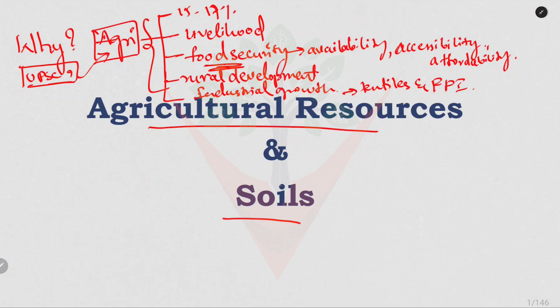Now coming to the topic: agricultural resources are natural and man-made inputs used in farming to produce crops. Agricultural resources are nothing but the inputs we need to produce the crop.